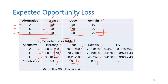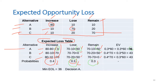Once we create the opportunity loss table, we compute the expected value by multiplying each probability by the corresponding loss value and summing across all alternatives. For example: 0.4 multiplied by 0, plus 0.3 multiplied by 60, plus 0.3 multiplied by 60, gives a sum of 36. Similarly, for the second alternative it equals 43. The minimum expected opportunity loss — 36 — indicates the optimal decision.